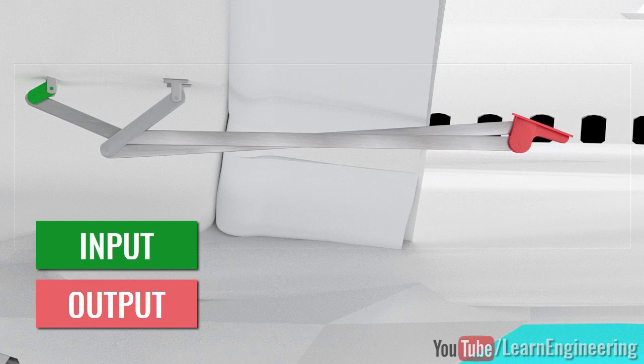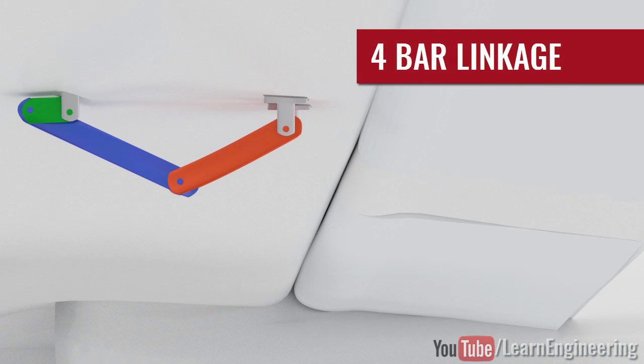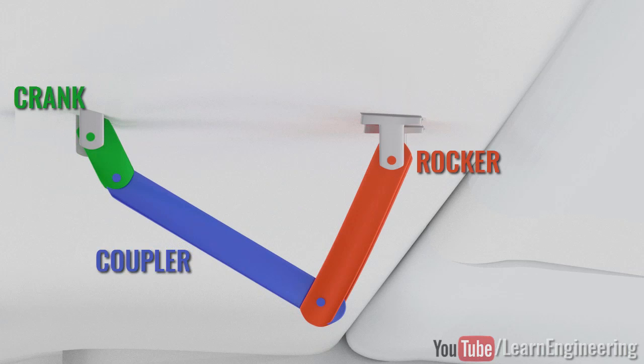Let's simplify the mechanism. This is basically a 4 bar linkage. When the input crank moves, the output rocker rotates as shown.